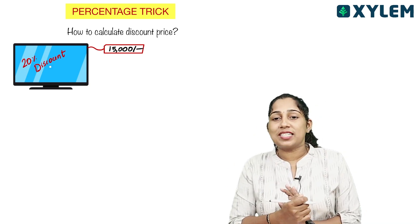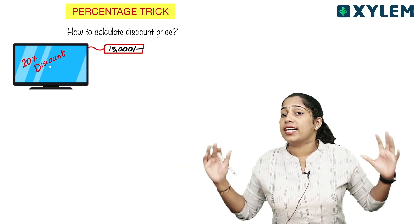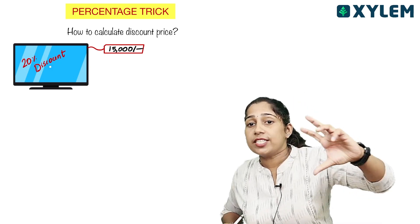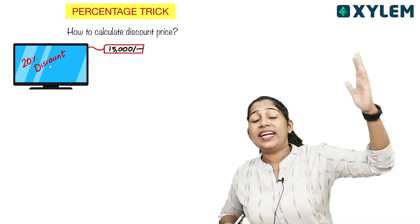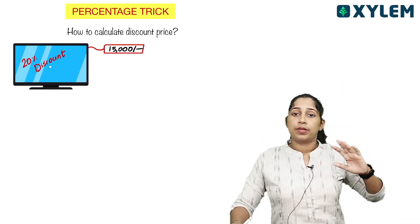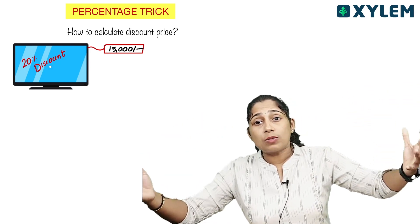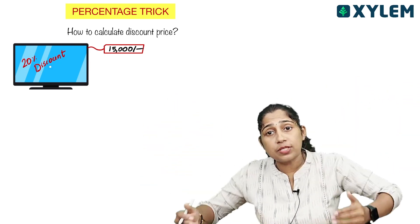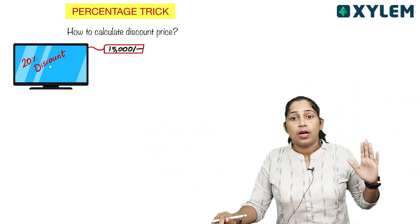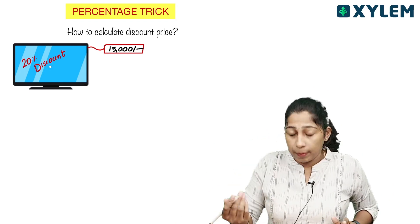If you have a TV, the rate is 15,000. But what is the 20% reduction on that TV? That means you need to reduce the amount of 15,000 by 20%. Okay, let's do this.